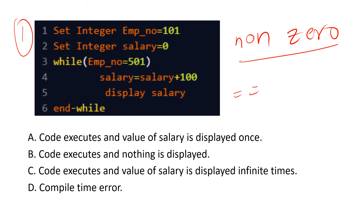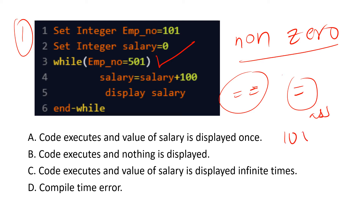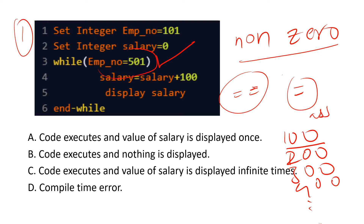Double equals (==) is a comparison operator and single equals (=) is an assignment operator — two different operators. Here, employee number is assigned 501, which is a non-zero value, so the loop executes. Salary becomes 0 + 100 = 100, printed, then 200, 300, 400 — and so on. Since employee number is always 501 (non-zero), there is no end to this loop. This is an infinite loop, so option C is the correct answer.